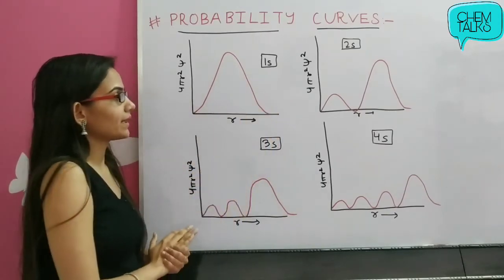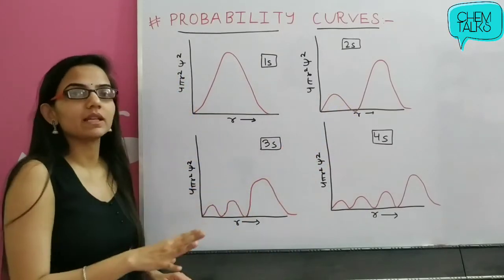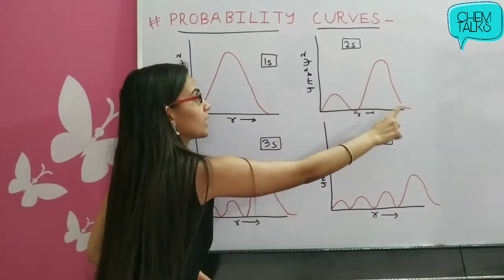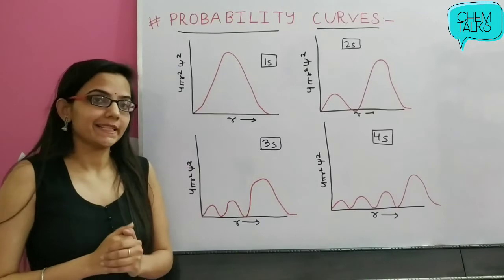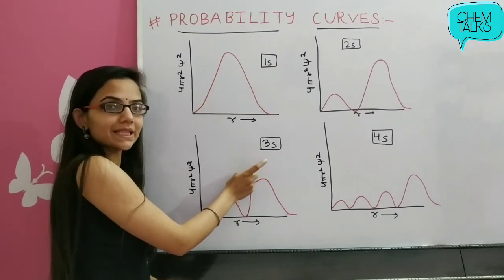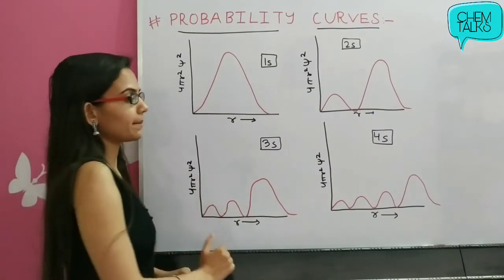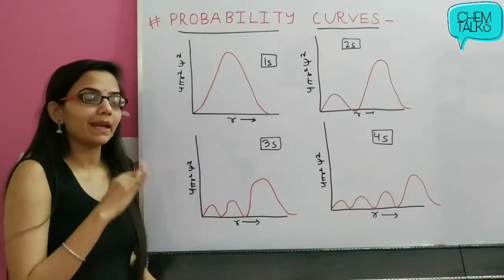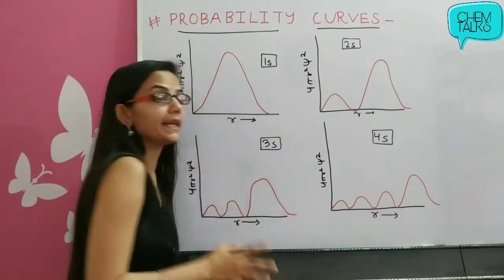When we go to 2s, there is first a maximum probability region, then a node is achieved — an area where the probability of getting electrons is approximately zero — and then we get a second high probability region. So for 2s we get two high probability regions and one node. For 3s, the principal quantum number is 3, so we get three maximum probability regions and two nodes. For 4s, we get four high probability regions and three nodes.